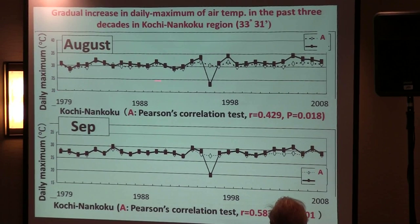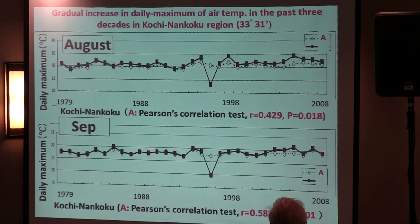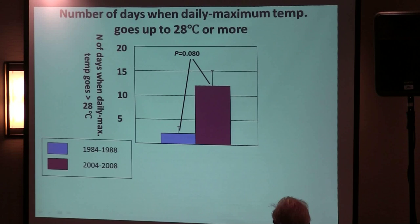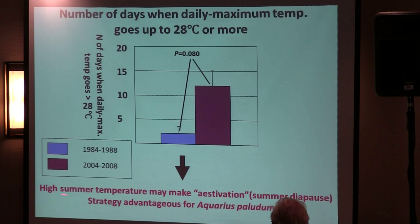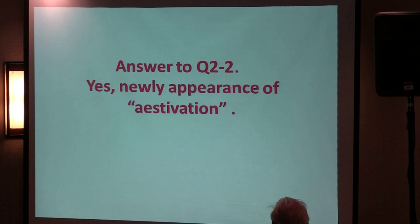Looking at temperature in Kochi over the years: there is a significant increasing trend. The number of days when the daily maximum temperature reaches 28 degrees or more increased from 2004 to 2008. So probably, due to that, they shift to enter diapause even in summer. High summer temperature makes an aestivation strategy advantageous. Answer to question 2.2: yes, newly appearance of summer diapause.